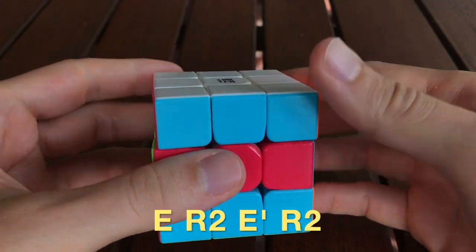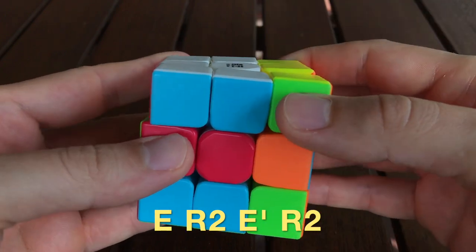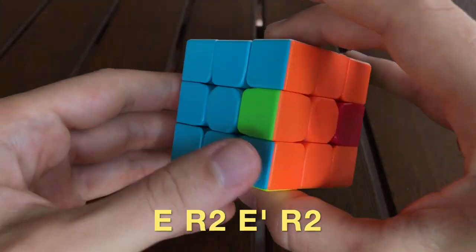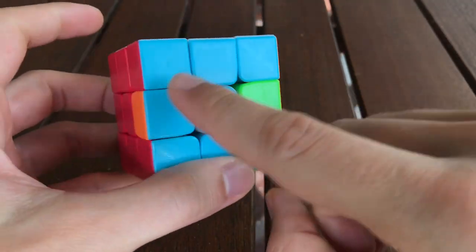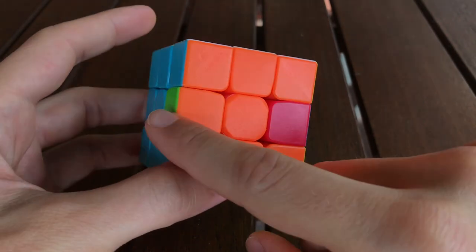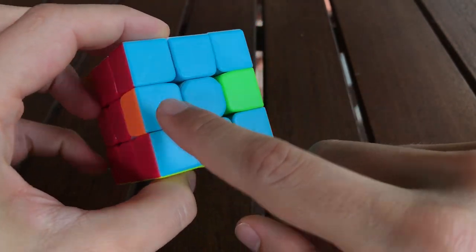So let's take a look at the original algorithm again. Remember it's E R2 E' R2. And notice that it sent the orange and blue edge piece to the red and blue side, sent the red and blue edge piece back to the orange and green, and the orange and green to the orange and blue.